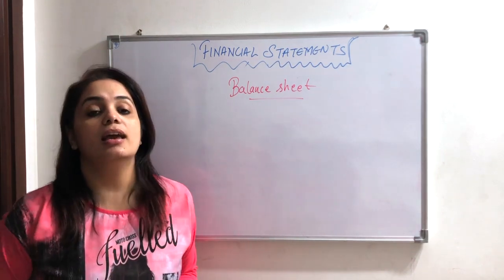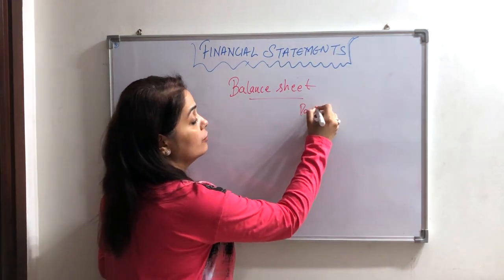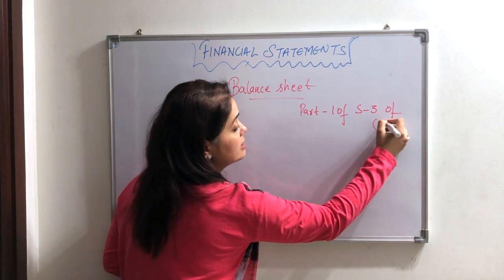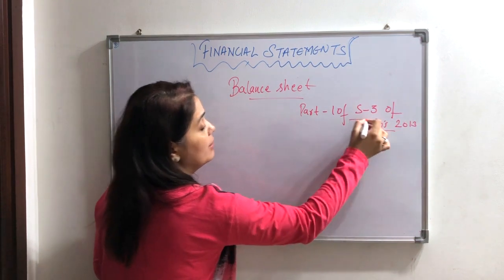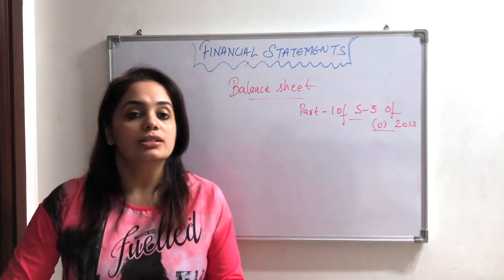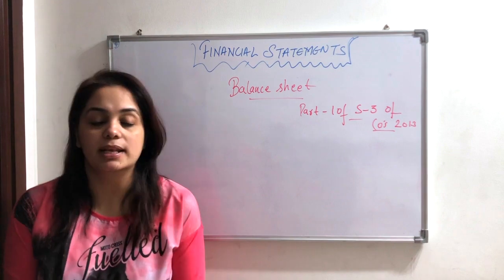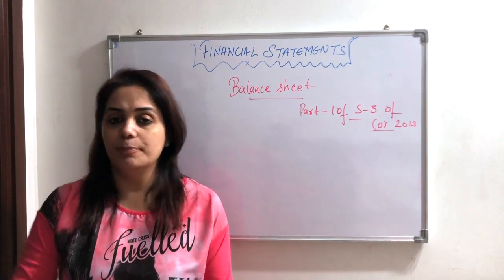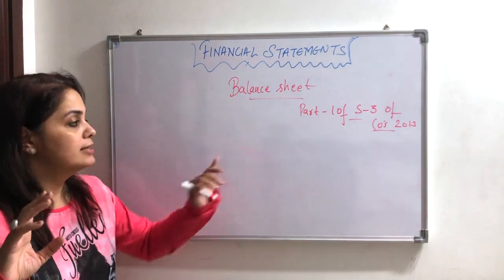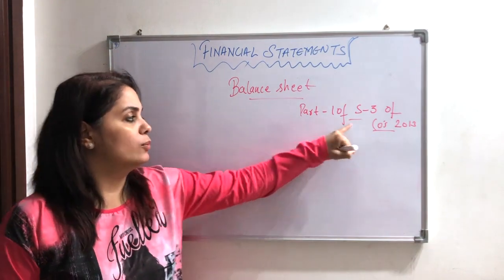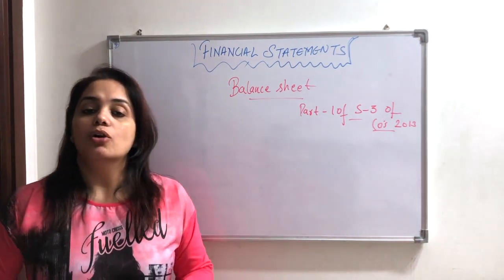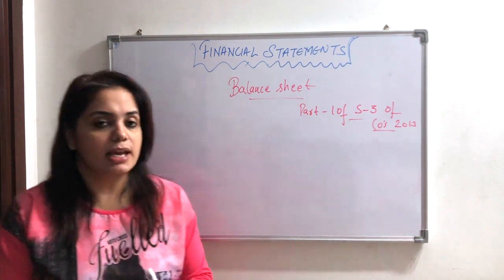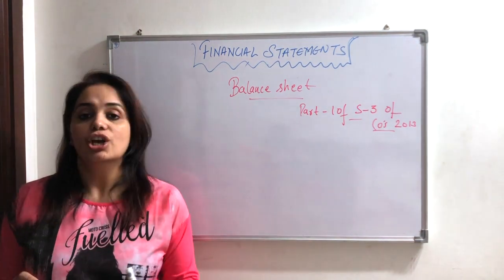Where do we get to know from which items to include? This we got to know from Part 1 of Schedule 3 of the Companies Act 2013. In this, all the rules, norms, and legal things are written — including in which way the balance sheet format is to be written and where assets and liabilities are placed. All these details are given in Part 1 of Schedule 3.